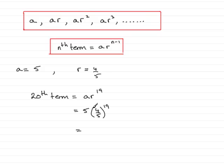Don't make the mistake of doing 5 times 4 fifths, and that will give you 4, and then doing 4 to the power 19. No, it's 4 fifths to the power 19. So then you would times it by 5.